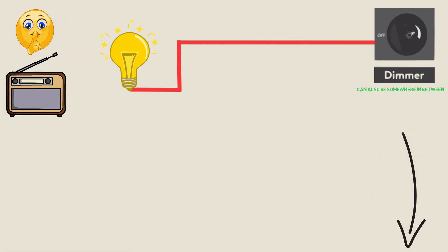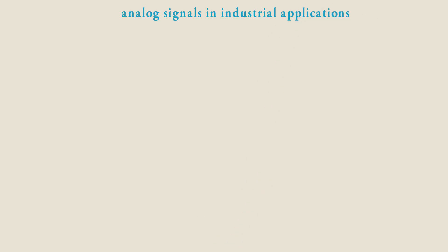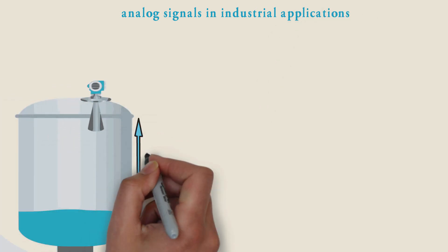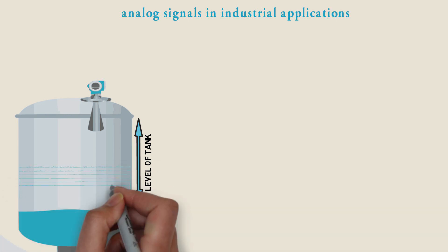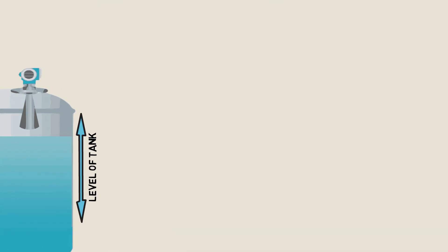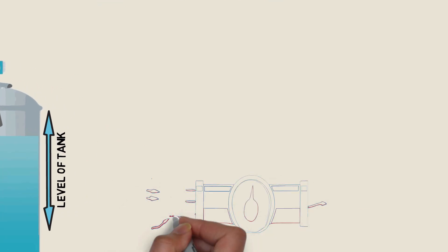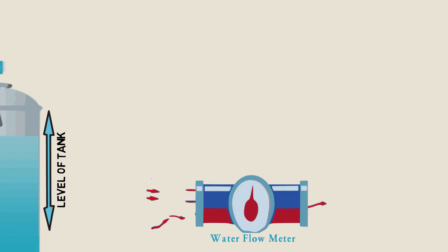Now let's look at some examples where we might use analog signals in industrial applications. For example, we might want to measure the level of a tank, whether it's empty, or somewhere in between, or full. Or we may need to monitor the flow in a pipe, and how fast is that water moving.